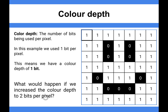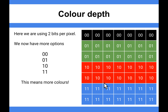What would happen if we increase it to two bits per pixel? With one bit per pixel we've only got two possible colours — a one or a zero. If we had two bits per pixel, we've suddenly got four colours, because with two bits: one-one is three, one-zero is two, zero-one is one, and zero-zero is zero. So we've got four different combinations and therefore four different colours in our image.